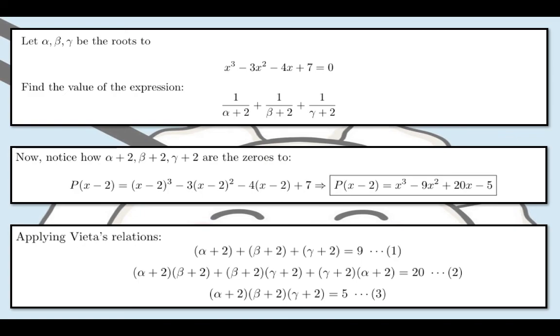From the previous step, we can apply Vieta's sums. Note that we're going to get the sum of the roots, the product of the roots taken two at a time, and the product of the roots, since we have three roots. Now, equations 1, 2, and 3 refer to the three sums we can get applying Vieta's relations. Since α+2, β+2, and γ+2 are the zeros to the polynomial, everything will be expressed in α+2, β+2, and γ+2. We'll be getting the three equations.